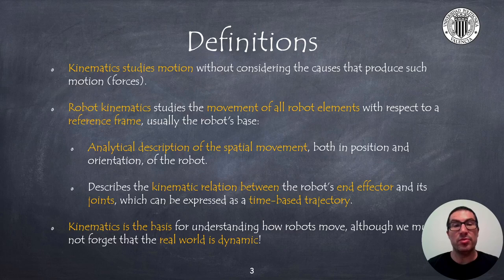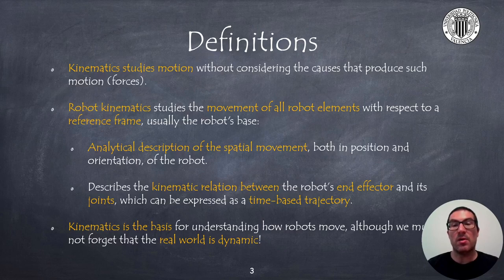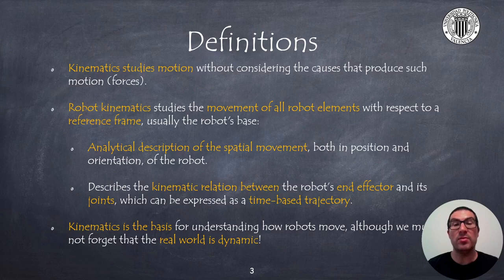It allows, therefore, to establish a relationship between the end effector and the robot's joints as a function over time, both in position and speed. Kinematics is the basis for understanding how robots move. In a large number of applications where robots do not move at high speeds, kinematics plays a fundamental role.